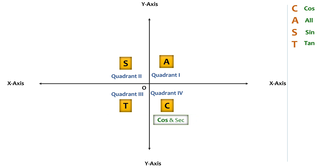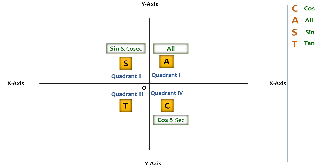C in the fourth quadrant means cos and its inverse sec ratio is positive there. A in the first quadrant means all ratios are positive there. S in the second quadrant means the sine ratio and its inverse cosec ratio are positive there. Similarly, T in the third quadrant means tan and its inverse cot ratio are positive there. Now let's write the angles which fall in each quadrant of the chart.